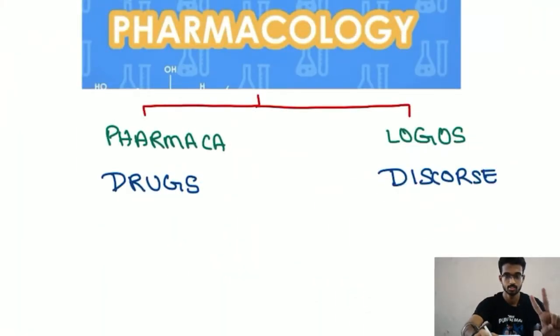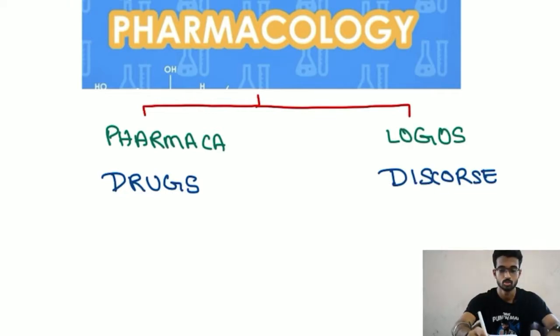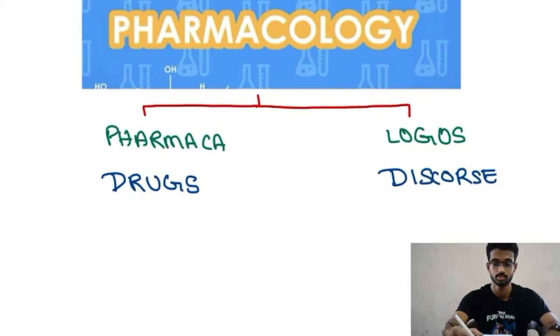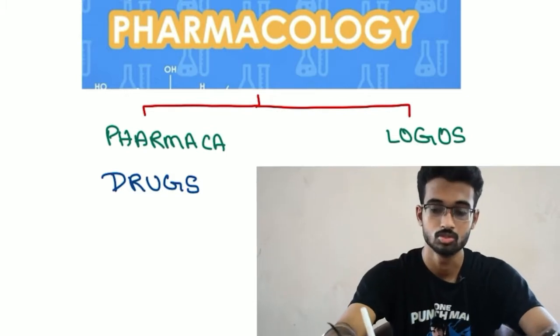Pharmacology is called Pharmakon and Logos. Pharmakon means Drugs. Next, Logos — Logos is also called Pharmakon, meaning the study of drugs.